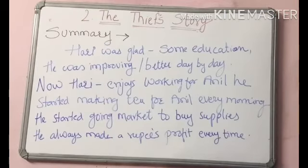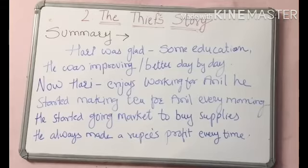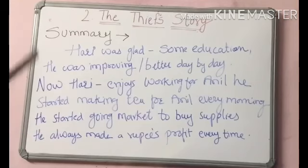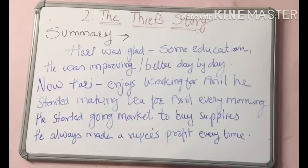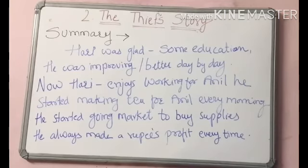Hari was glad that he was now getting some education and was improving day by day. He now knew how to read, make words, and count numbers. Hari started going to the market to buy supplies for Anil. Every time he went, he made a profit of one rupee, which he kept for himself, and Anil never asked him about it. Gradually, Anil and Hari were becoming good to each other.